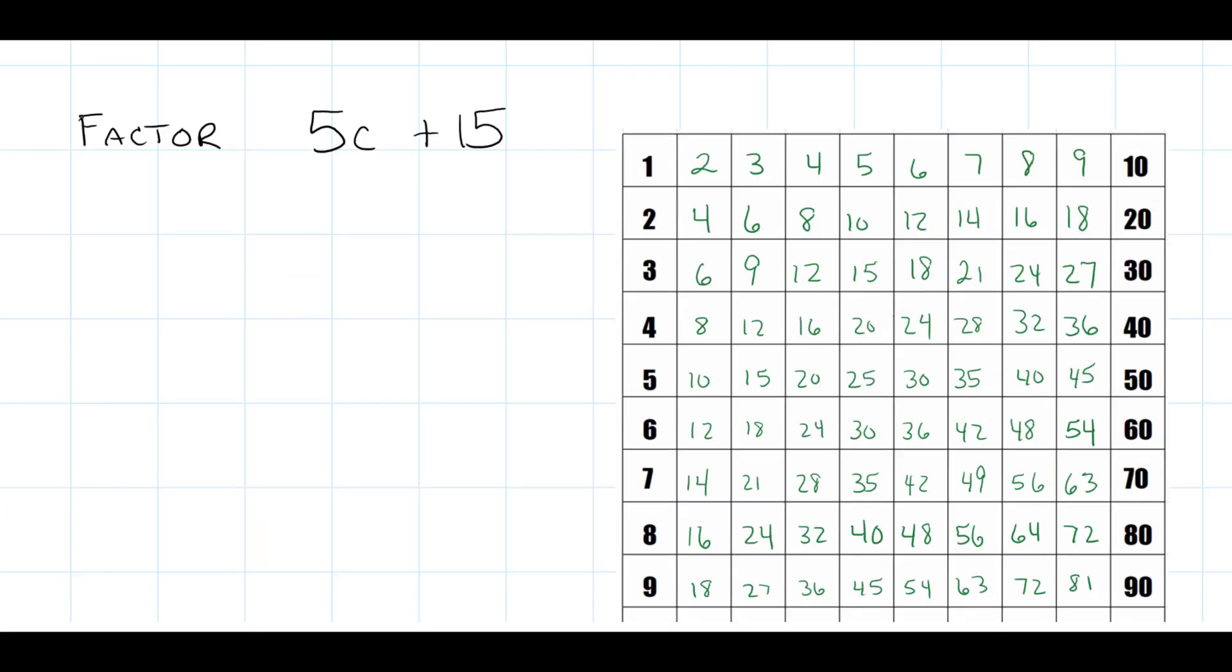This is a factoring question that came up that a student had a question on, so I wrote it down to explain to you guys. He got a little bit stuck because when he was looking at his columns, he couldn't find 5 and 15, and I think it was because he was overlooking the fact that we can divide by the same number. Five can go into 5 one time, and 5 can go into 15 three times.